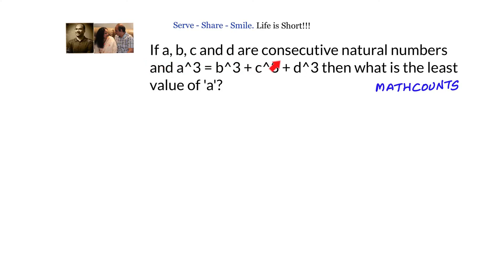If a, b, c, and d are consecutive natural numbers and a cube equals b cube plus c cube plus d cube, then what is the least value of a? We have been given that a, b, c, d are consecutive natural numbers such that a cube equals b cube plus c cube plus d cube — that is, the sum of the cubes of three consecutive natural numbers equals the next number's cube.